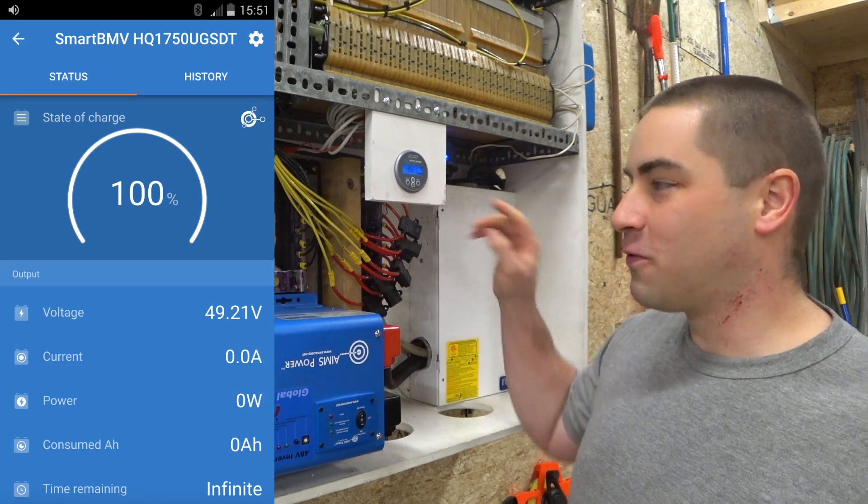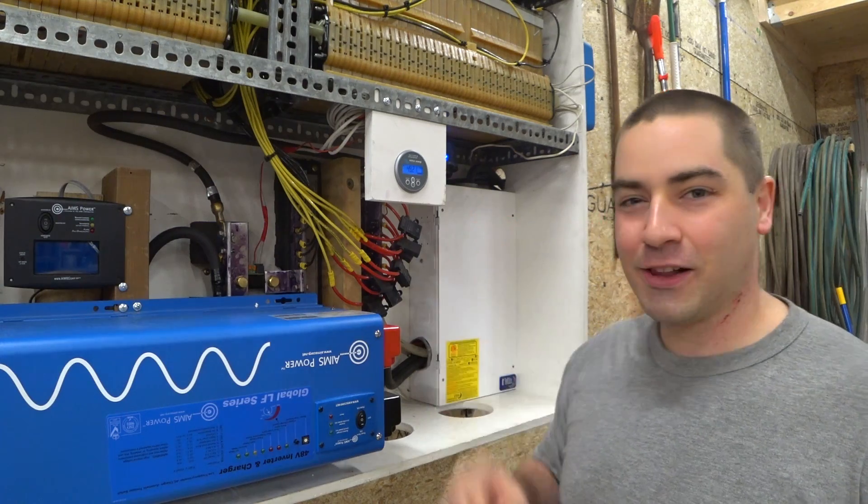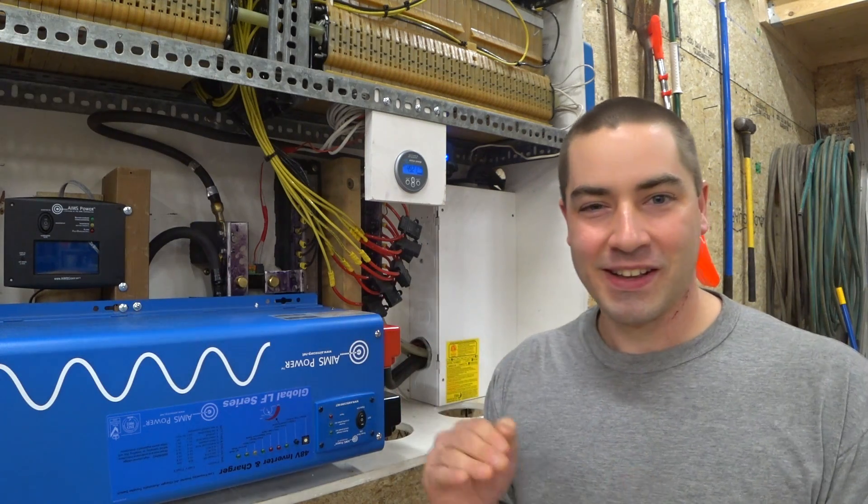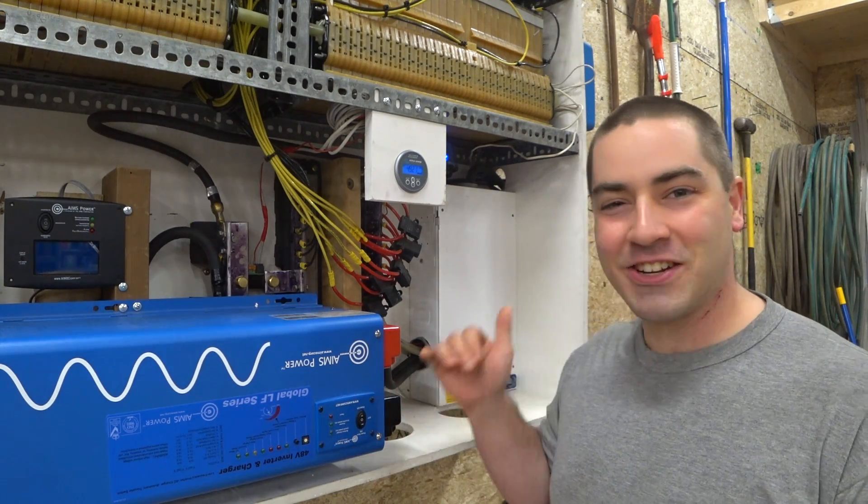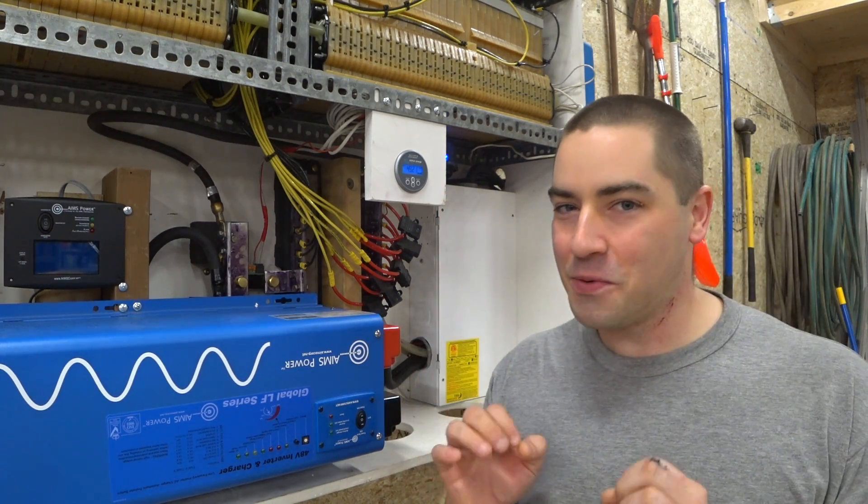What I've got it to is 49.21, and I'm pretty happy with that, that I was able to get it that close to 49.2. I tried this yesterday, and I kept overshooting or undershooting the mark. So the charge controller has been off for an hour now, and we're pretty steady right here. So I think we got it.